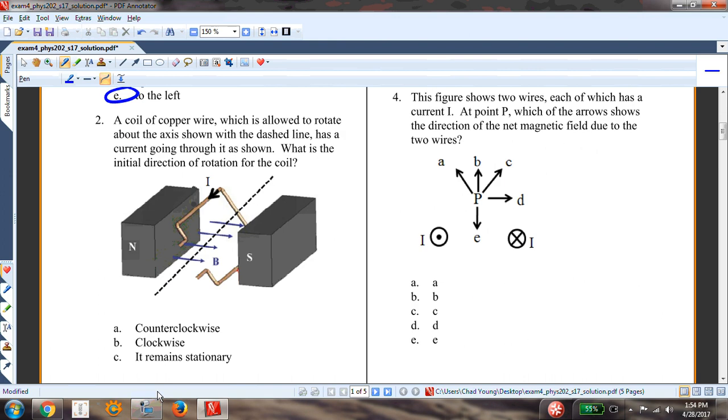A coil of copper wire is shown here. What is the initial direction of rotation for the coil? Let's consider this. I have my current coming out of the page, my magnetic field in this direction, and so current out of the page, magnetic field to the right. That means it's going to be up. So the force here is up. That's going to cause a clockwise rotation.